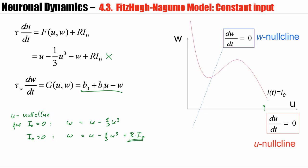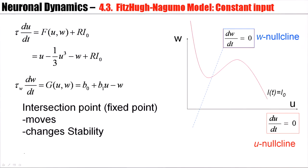And as it shifted upward, you see that the intersection point, the fixed point, changes.